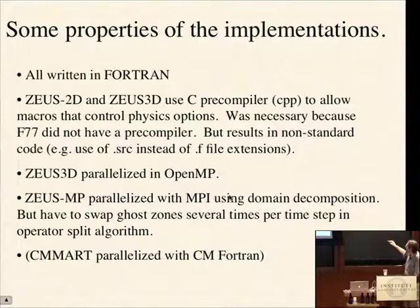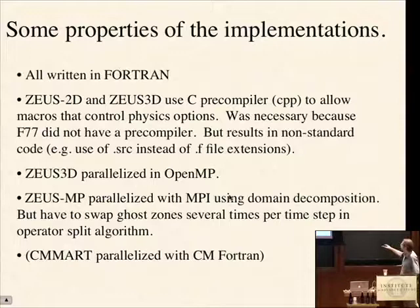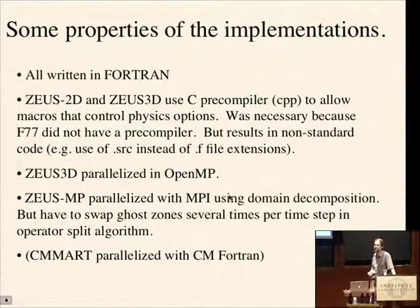There are various parallelized versions with OpenMP, the MPI-parallelized version Zeus-MP2, and there was even a version that worked on the Connection Machine using CM Fortran. The Connection Machine was a great machine — very much like GPUs, actually, but with a decent compiler that did all the memory management for you. But it's long gone, so that version is not available anymore.